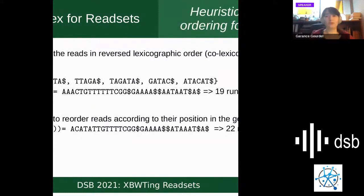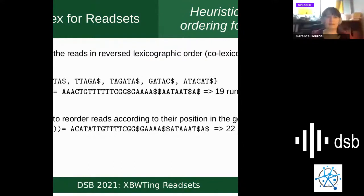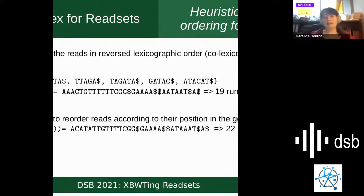We can also talk about heuristics to improve compression of the EBWT. There is first the reorganizing of reads in reverse lexicographic order (colexicographic order) — in our example this gives the same result of 19 runs since they were already in reverse lexicographic order. Then there is Spring, a separate software that attempts to reorder reads according to their position in the genome, which in this case does worse than the original RLO EBWT. Then there is a separate data structure: the XBWT, a generalization of the BWT for labeled trees.